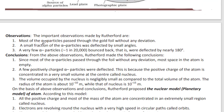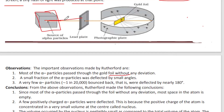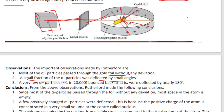Observations: Most of the alpha particles passed through the gold foil without any deviation. A small fraction of alpha particles was deflected by a small angle. Very few alpha particles bounced back, that is, were deflected by nearly 180 degrees.